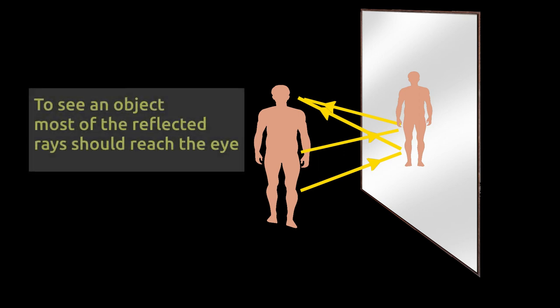To see an object clearly, it is required that most of the reflected rays from it reach our eyes. In the case of a polished surface, such as a mirror, all the rays reflect back to the eyes and a clear image is formed.